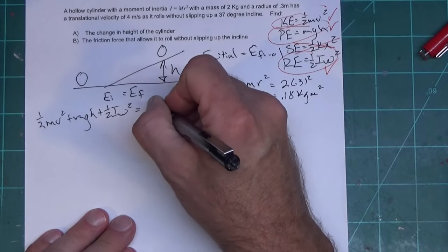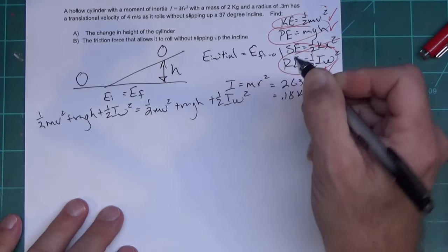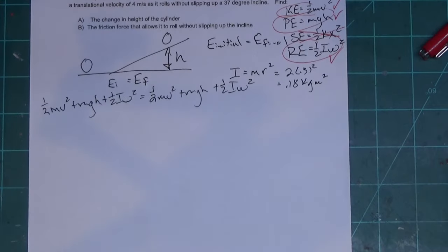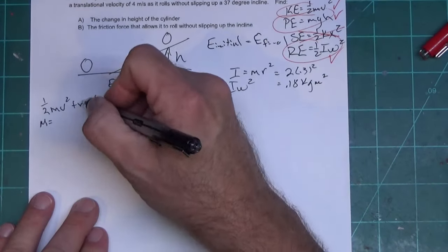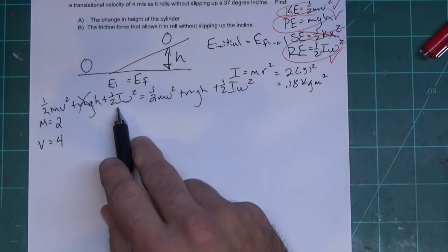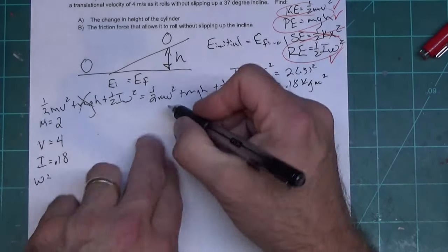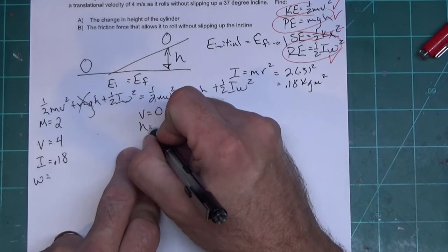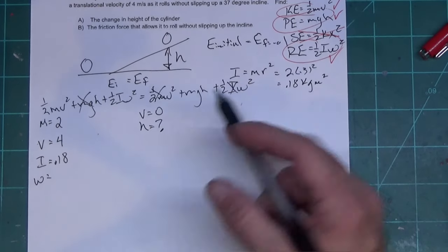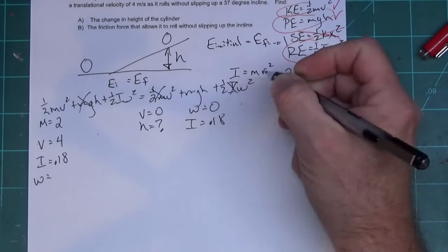Setting up the energy equation: ½mv² + mgh + ½Iω² = ½mv² + mgh + ½Iω². The initial height is zero, so that term drops. Known values: mass = 2 kg, initial velocity = 4 m/s, I = 0.18 kg·m². The final velocity is zero, so the final kinetic and rotational energy terms drop out, leaving us to solve for the final height h.